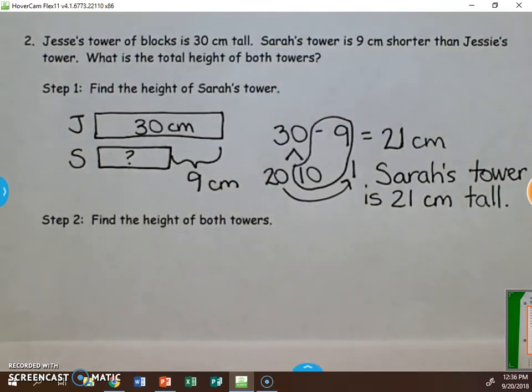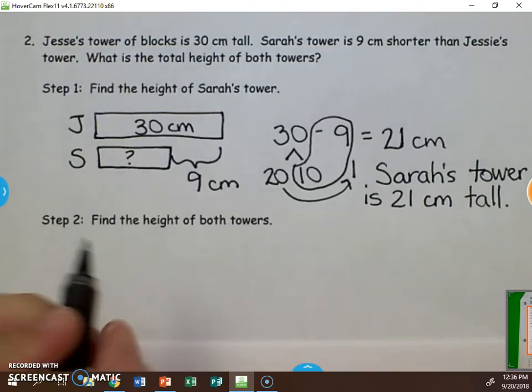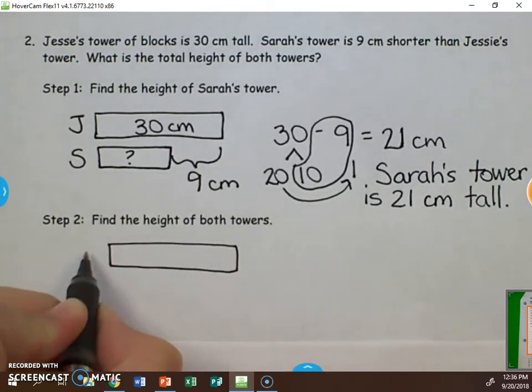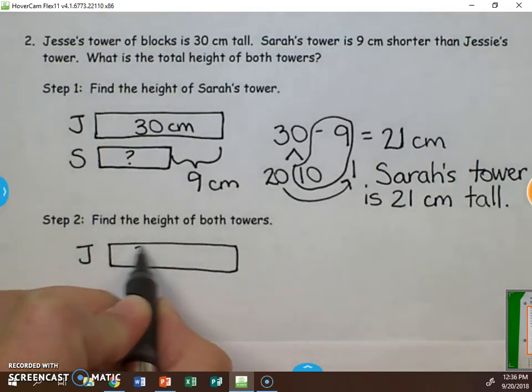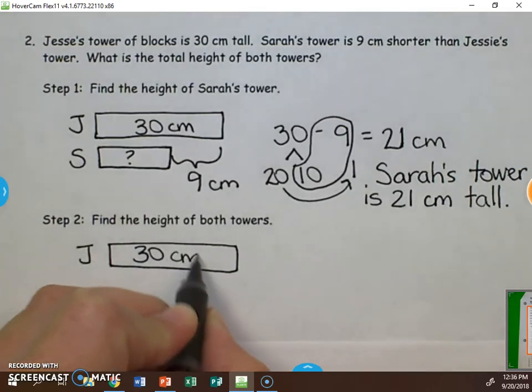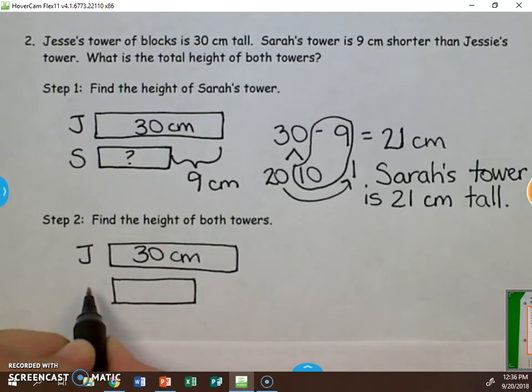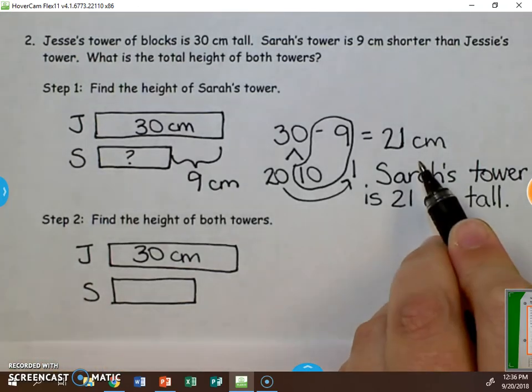That would be the read, draw, write problem solving method for step 1. Now let's look at step 2. We now need to find the height of both towers together. So once again, we draw our tape diagram. So we draw Jessie's, 30 centimeters. And we draw Sarah's, which we now know to be 21 centimeters.